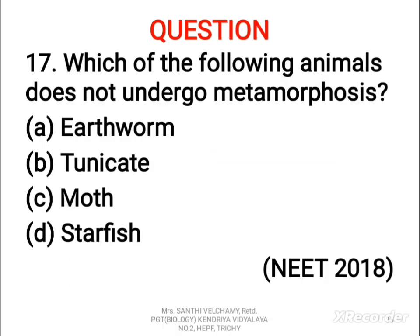17th question: which one of the following animals does not undergo metamorphosis? A) Earthworm, B) Tunicate, C) Moth, D) Starfish. The correct answer is earthworm. Metamorphosis is a process of transformation of an immature larva into adult form, possibly in two or more distinct stages. Animals that undergo metamorphosis show indirect development — Tunicate, Moth, and Starfish show this. But in earthworm, development is direct, so the larval stage is not present and hence there is no metamorphosis.